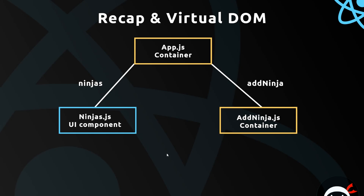Now if we ever want to add a ninja, we do it via this class-based component over here — we enter into the form and we fire the function which is passed down to this component as a prop from app.js. So when we invoke this function, it takes the new ninja, passes it back up here, and it adds that new ninja to the ninjas array on the state inside this container component.